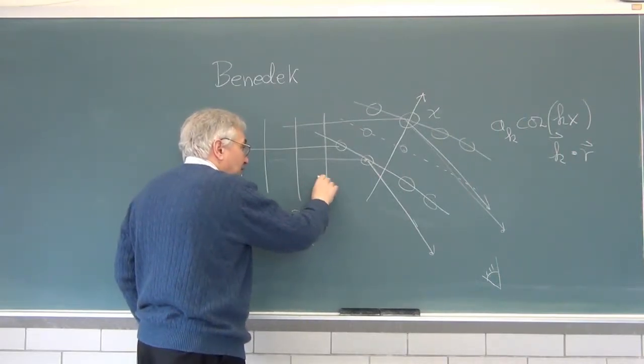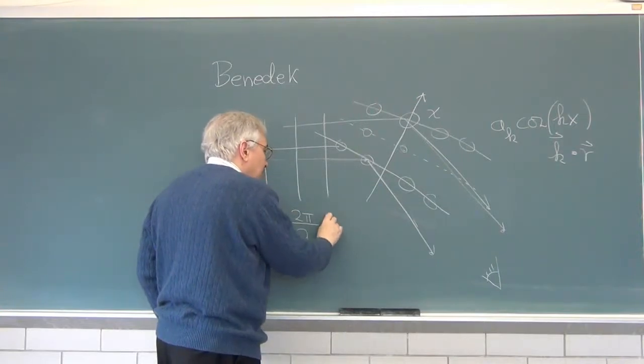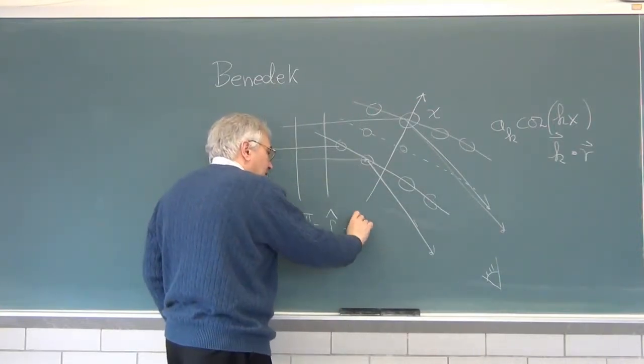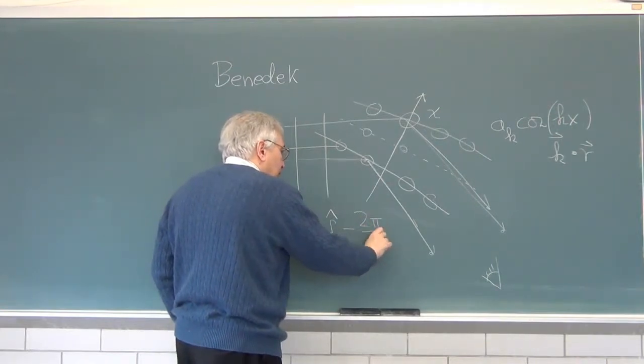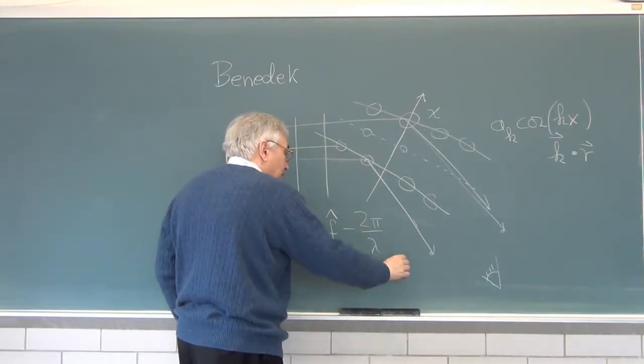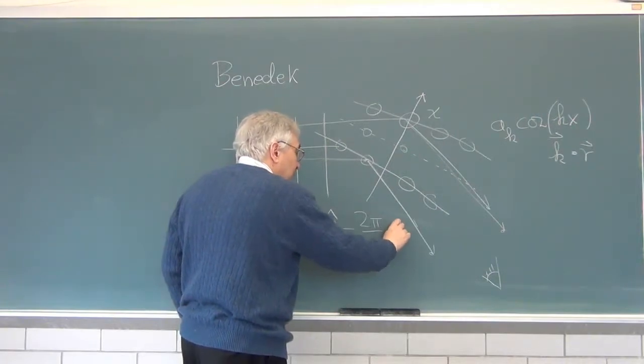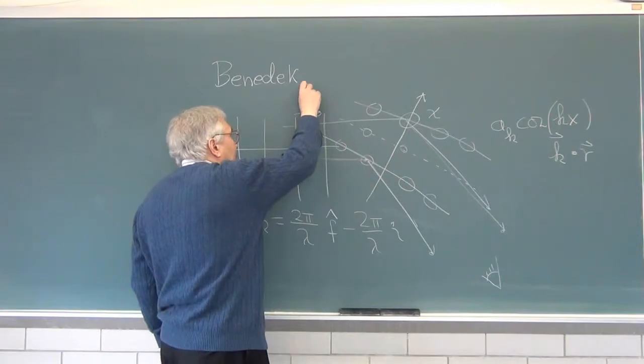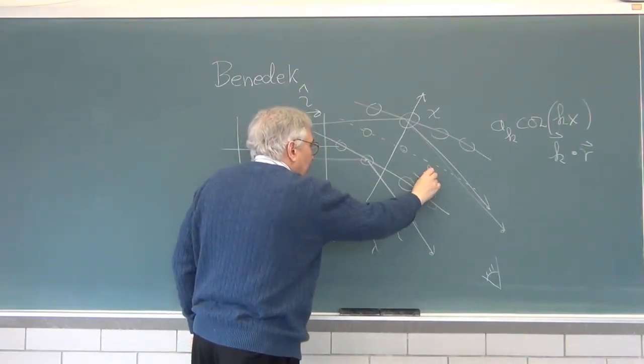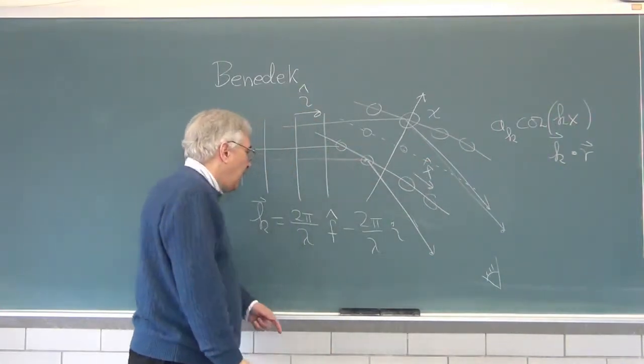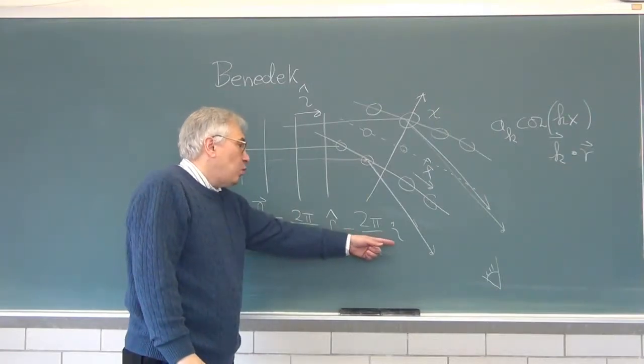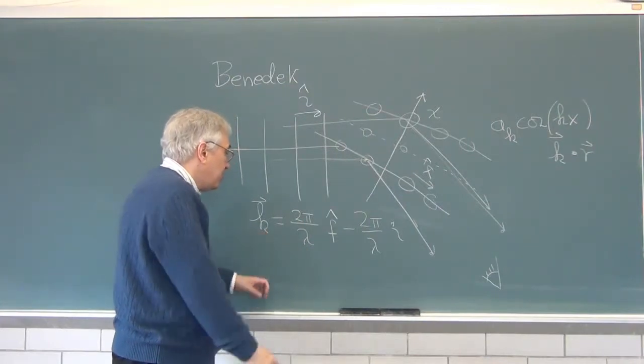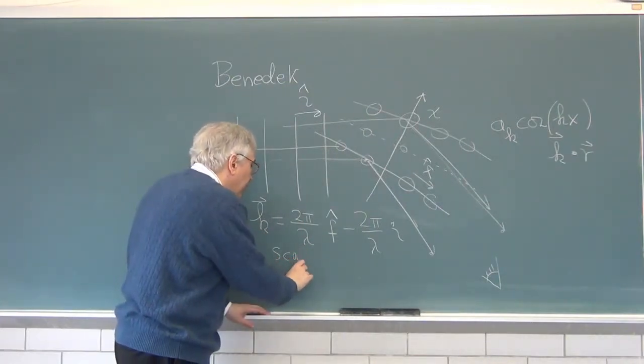The light wave length is lambda. 2 pi over lambda is the wave vector of the light. And the change in the wave vector of the light, it's just a change in direction, is this change in K is called the scattering vector.